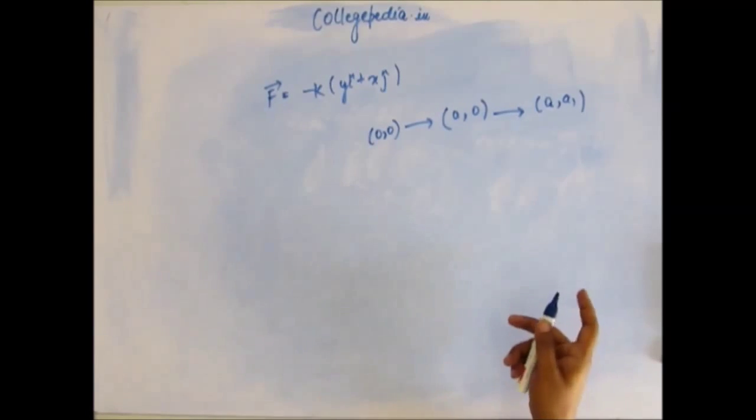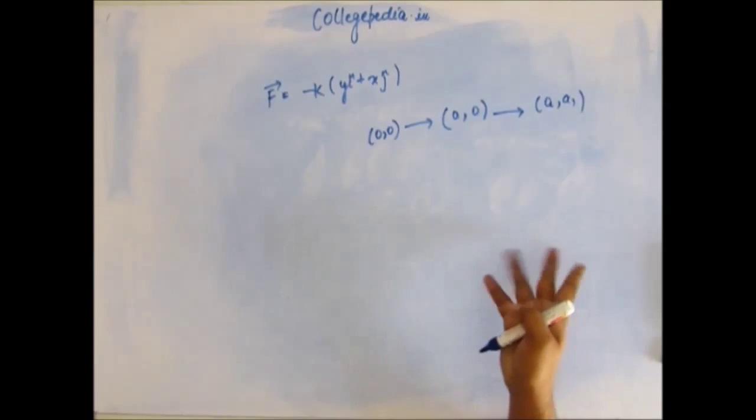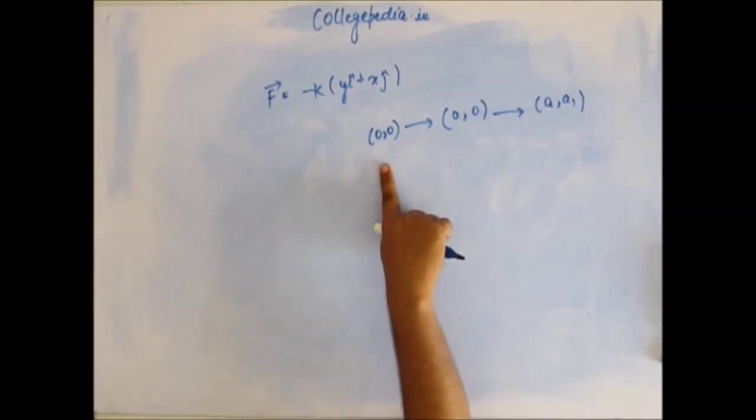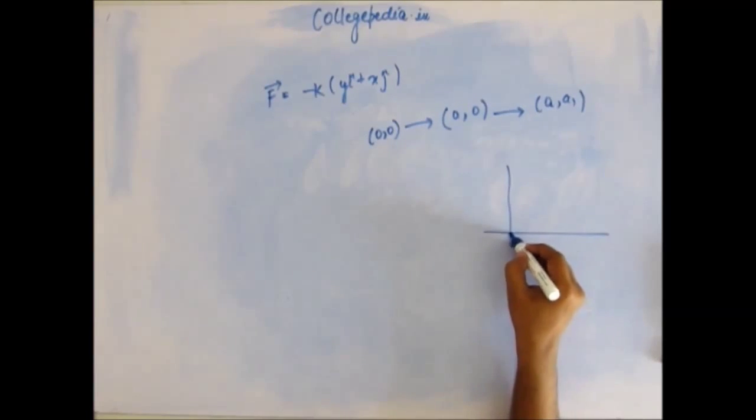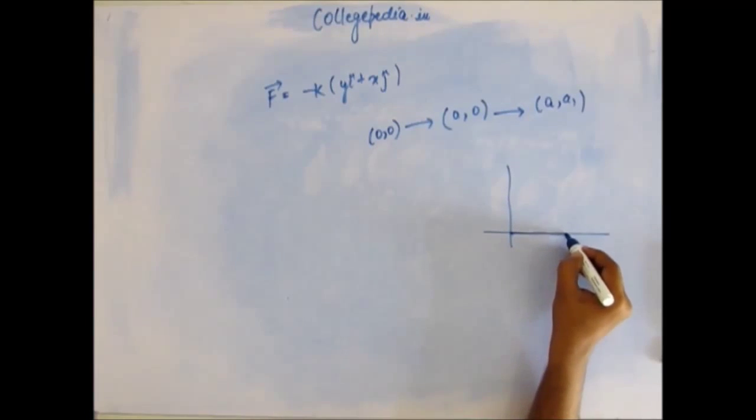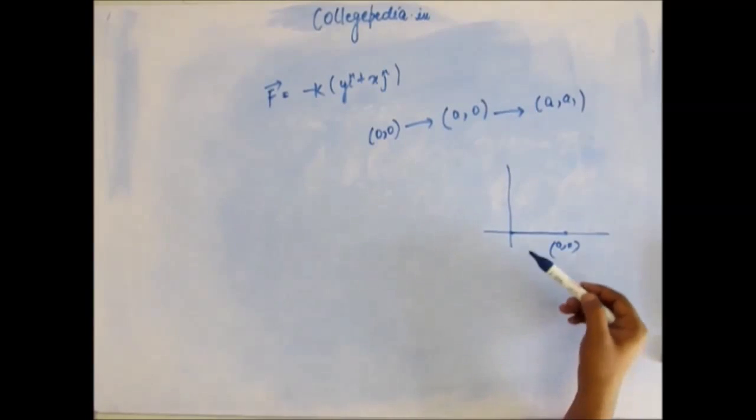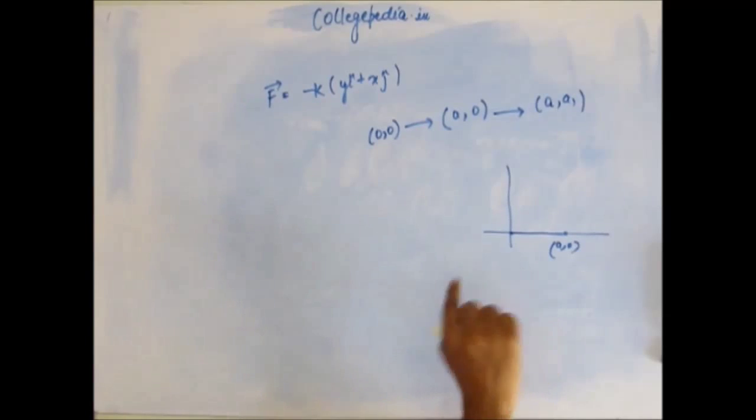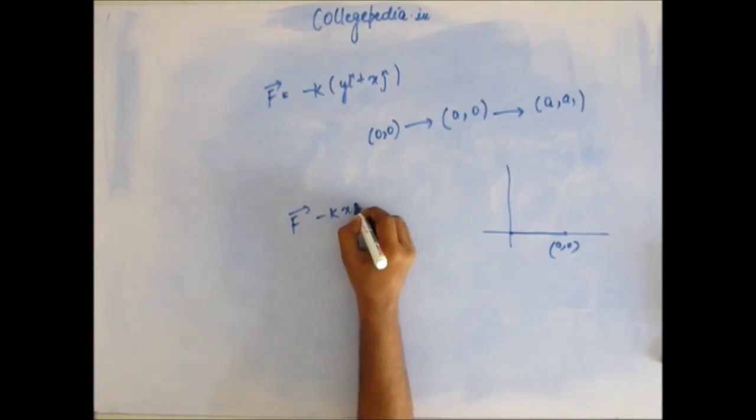Work is a scalar quantity and so you can find the work part by part and do the simple arithmetic to add them. There is no vector addition of it. So we will find the work done during the motion of the particle from (0,0) to (a,0). In the first half of the journey, the particle is moving like this because y-coordinate remains 0. So it is moving from origin to a point (a,0). During the course of journey, y-coordinate is 0, so in the force that you see, this y will be 0.